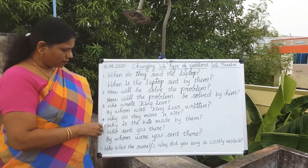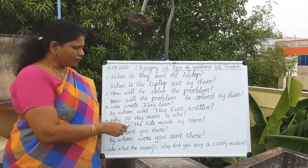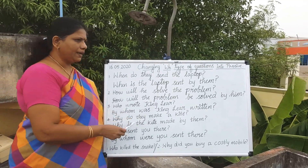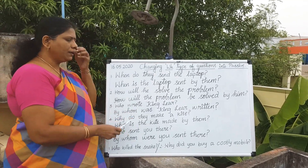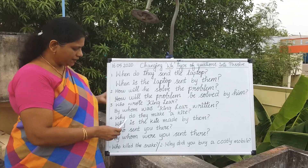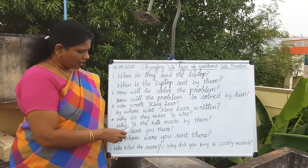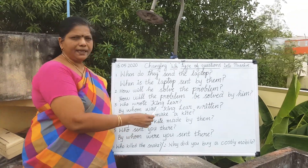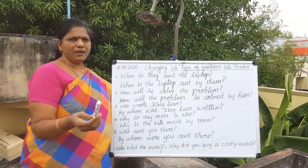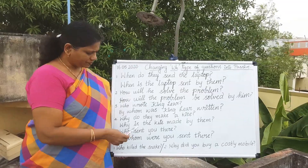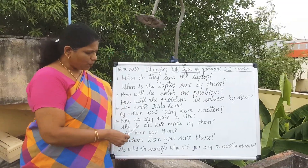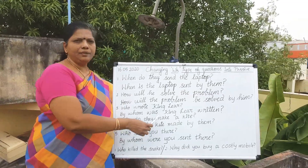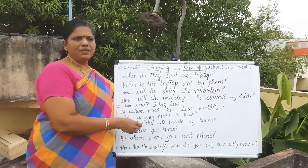Next one: Why do they make a kite? They make a kite. A kite is made by them. So, why is the kite made by them? The statement becomes a question in the same way.